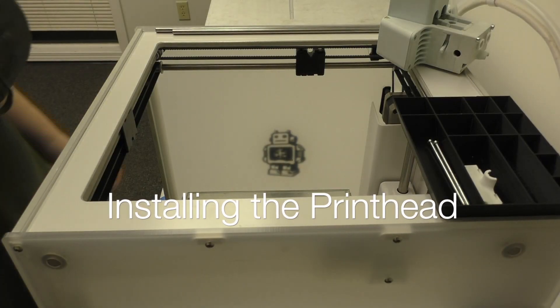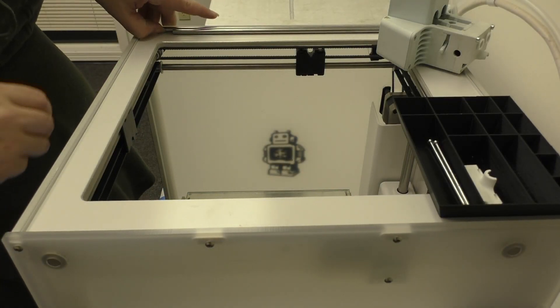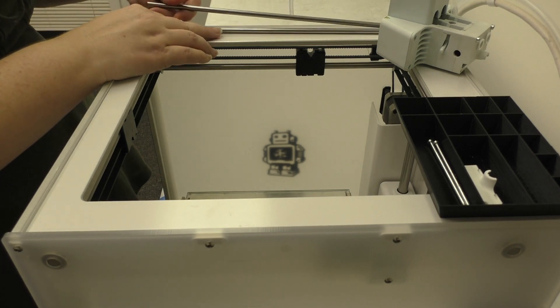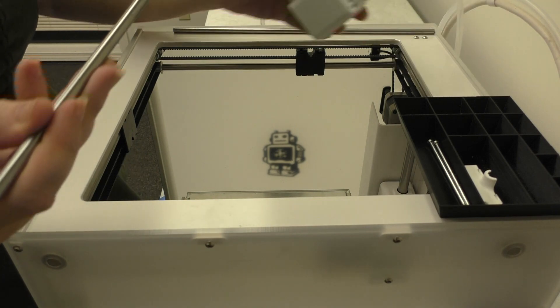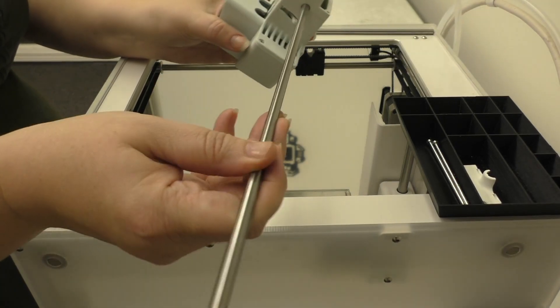We're going to go ahead and install the print head back in the printer now. So you want the longer of your two print head shafts. This will be the X-shaft. You're going to go ahead and put that straight through the print head.